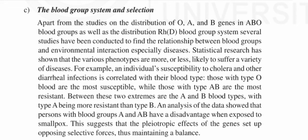For example, an individual's susceptibility to cholera and other diarrheal infections is correlated with their blood type. Those with O blood are the most susceptible, while those with type AB are the most resistant. Between these two extremes are the A and B blood types, with type A being more resistant than type B. An analysis of the data also showed that persons with blood groups A and AB have a disadvantage when exposed to smallpox.